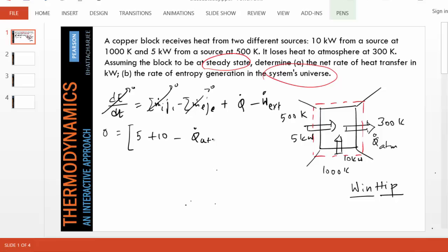This must be a positive quantity, absolute amount, and there is no work at all. So this term goes away, no external work. So this is very simple. Q dot atmosphere turns out to be simply 15 kilowatts.